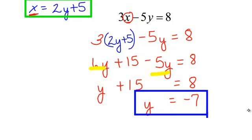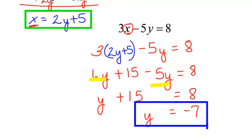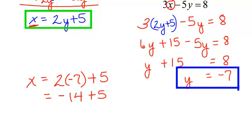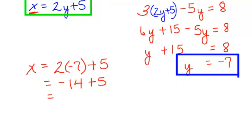Well remember, x was equal to 2y plus 5. So since x is 2y plus 5, I will have x is equal to 2 times negative 7, because that is what y is. So 2 times negative 7 plus 5. 2 times negative 7 is negative 14 plus 5. So x will equal negative 9.